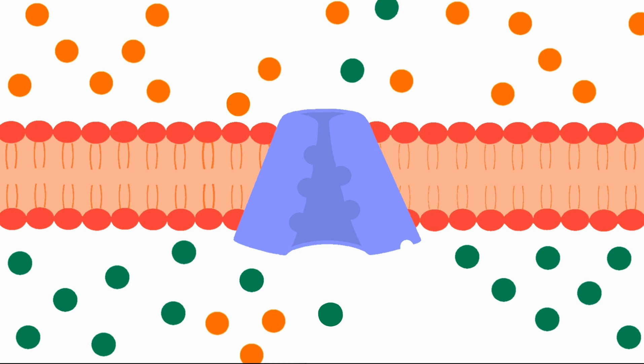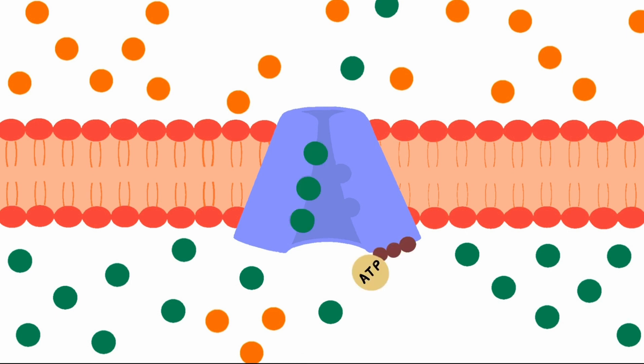The primary active transport through the sodium-potassium pump occurs in the following stages. The sodium-potassium pump binds three sodium ions from within the cytosol.